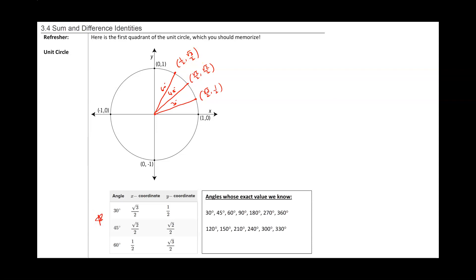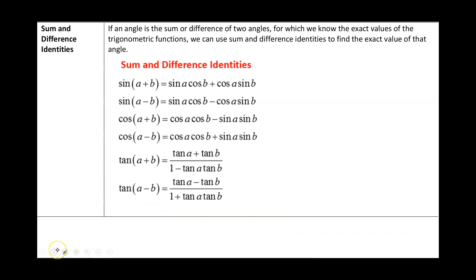This is also written here. For any multiple of 30 or 45 degrees, we can find a reference angle and find the exact values, since the value of a reference triangle is going to be the same as the trig value of the actual angle. So any multiple of 30: we got 30, 60, 90, 180, 270, 360, 120, 150, 210, 240, 300, 330. Also multiples of 45: 45, 90, and so on. All of these angles are angles whose exact value we know.